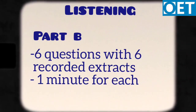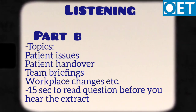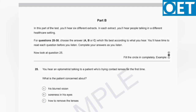Listening part B has six questions with six recorded extracts — one minute each. The extracts can be on different topics such as patient issues, patient handovers, team briefings, or workplace changes. You will get 15 seconds to read the question before the audio begins. For example, in question 25 you hear an optometrist talking to a patient trying contact lenses for the first time. You will read the question and options in 15 seconds, then answer as you listen.